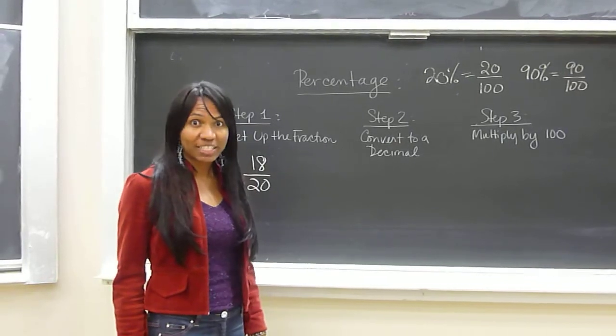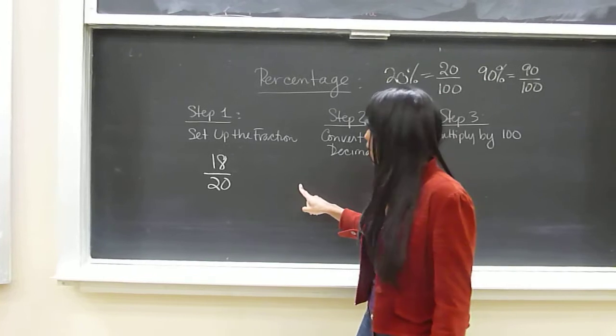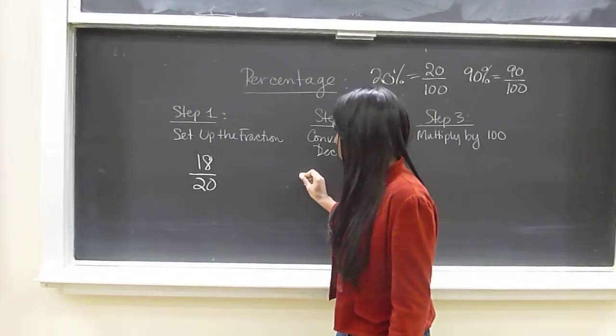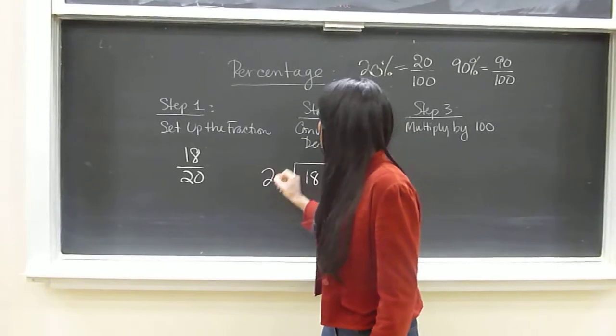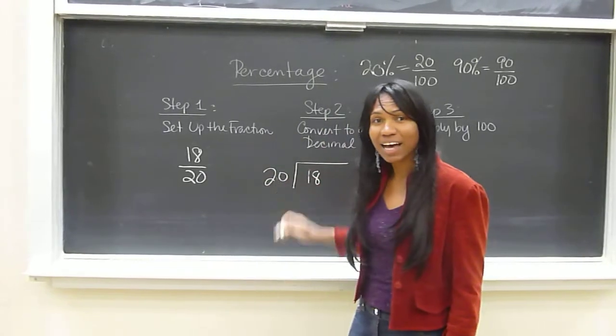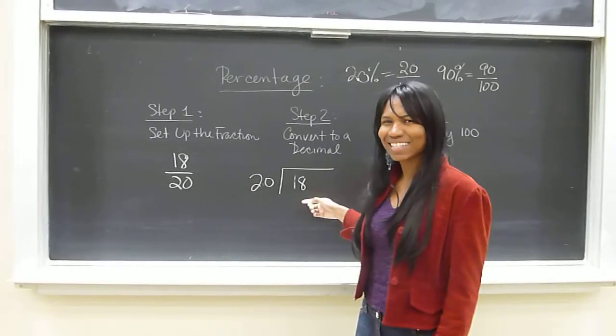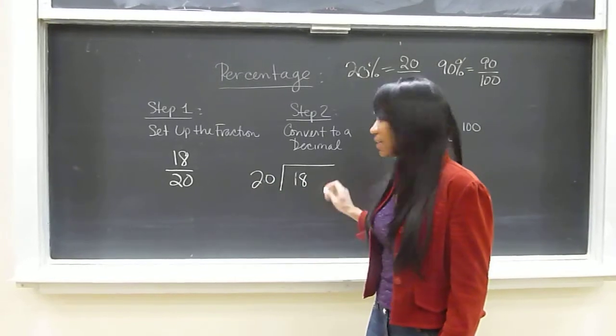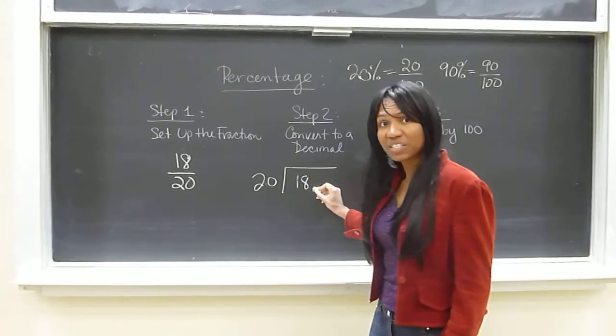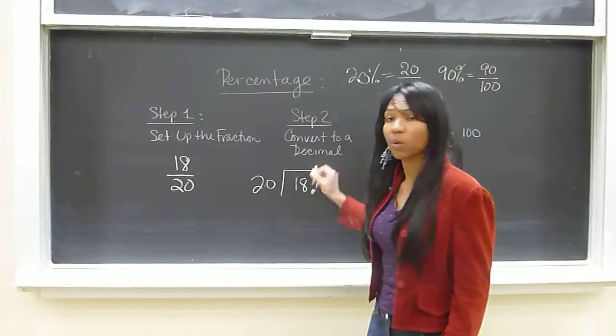Now we're going to convert that to a decimal. 18 goes inside and 20 goes on the outside of this division. Now 20 doesn't go into 18, so this is what we do. In order for us to divide this, we place a decimal here, a zero, and another decimal on top.